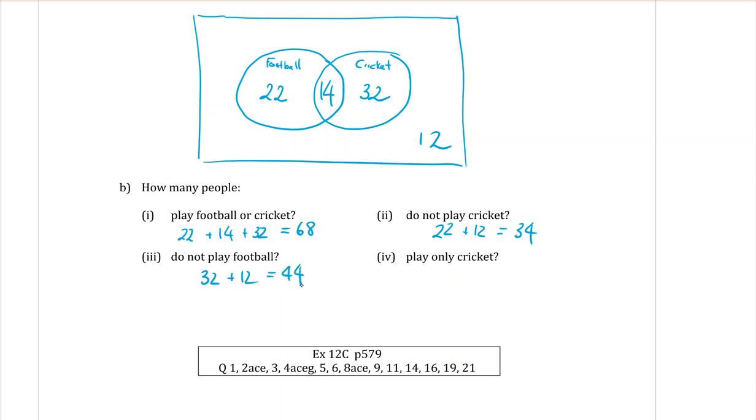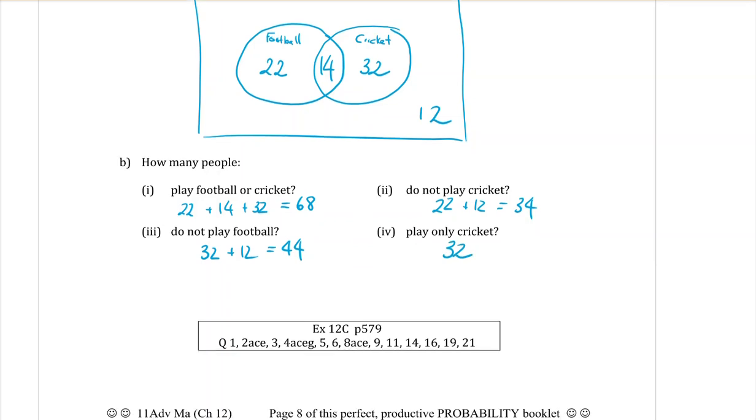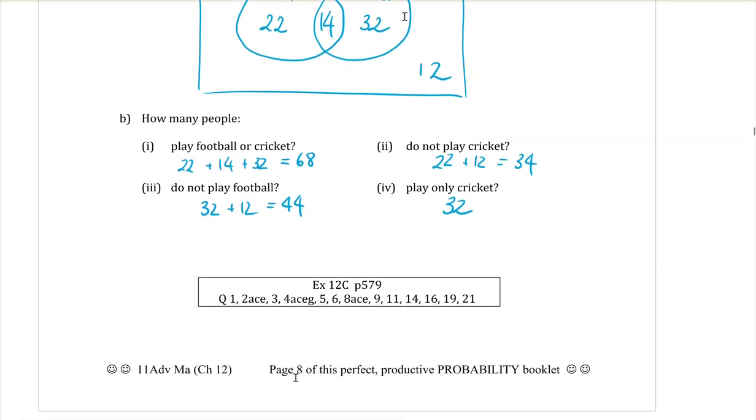And how many people play only cricket? Only means not overlapping. Cricket only is the 32. That's it. So 12C is today.